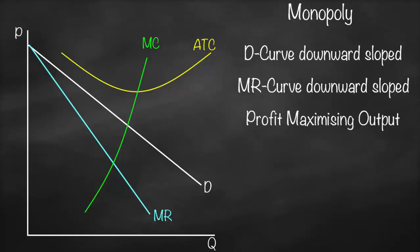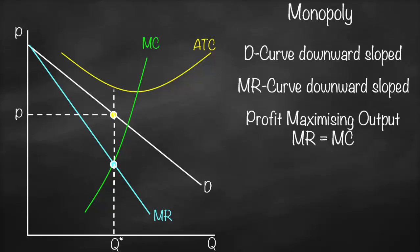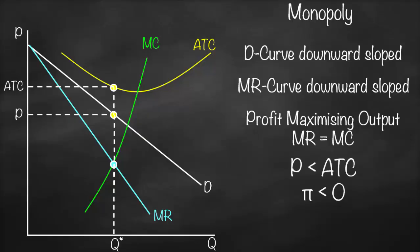The profit-maximizing condition is still marginal revenue equals marginal cost. The intersection of MR and MC gives us Q*. Going up to the demand curve gives us the price, and going up further to the average total cost and moving horizontally gives us the ATC. As we can see, price is below average total cost.